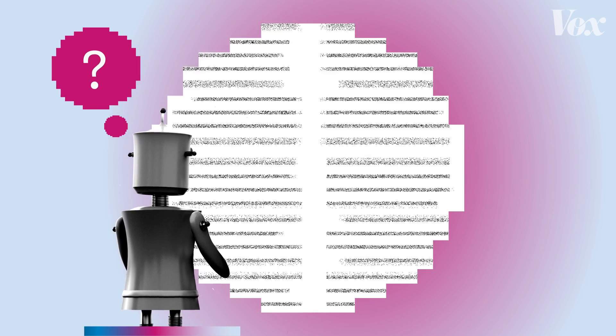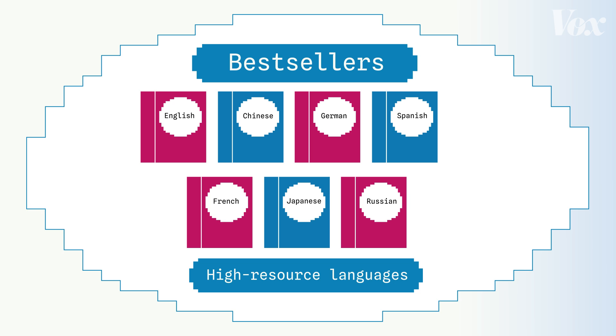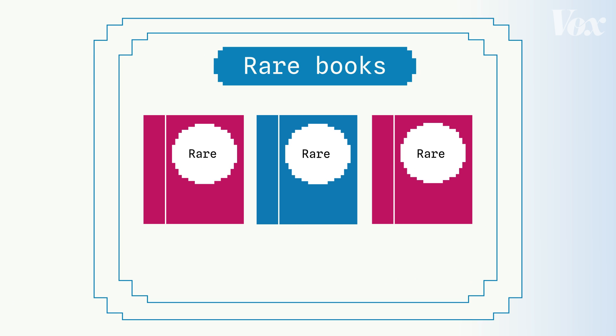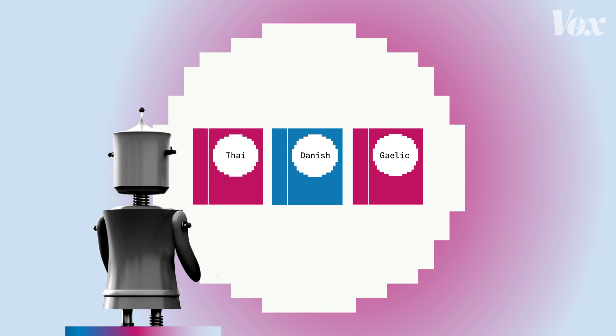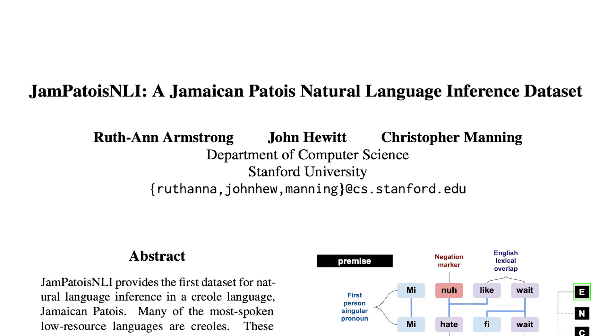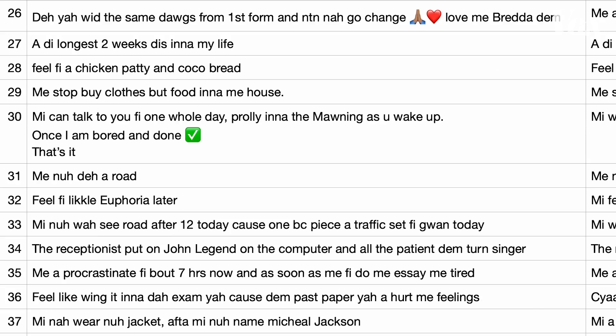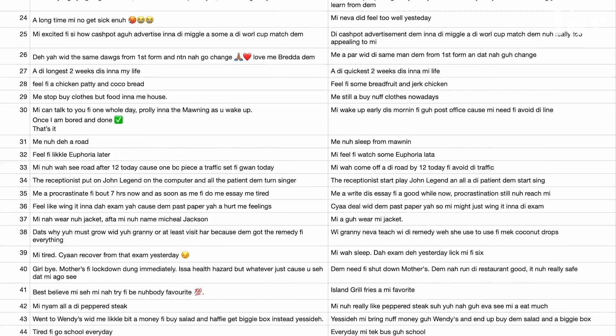This is Ruth Ann Armstrong. She's a researcher who I interviewed, and she's doing something that a lot of researchers are trying to do — make new datasets. Imagine our used bookstore again. It has a ton of Dan Brown books, or James Patterson, or Ann Tyler — this is like English, and German, and Chinese, the high resource languages. Then there are the rare books — these are the low resource languages. I'm someone from Jamaica. The language primarily spoken in Jamaica is English, but I also speak a Creole language called Jamaican Patois. Armstrong and her co-authors wanted to create a dataset that could explain this largely spoken language, but they weren't trying to generate text like ChatGPT. Instead, they wanted their model to understand it. To do that, Armstrong went through a bunch of examples of Jamaican Patois and lined them up.